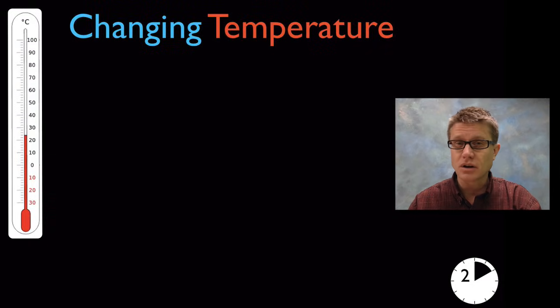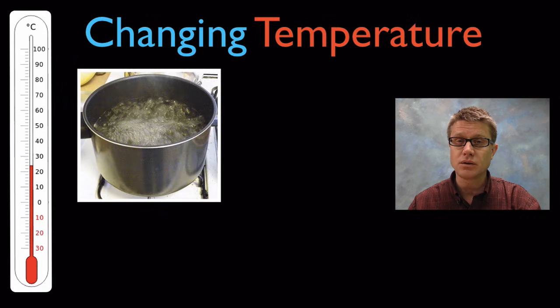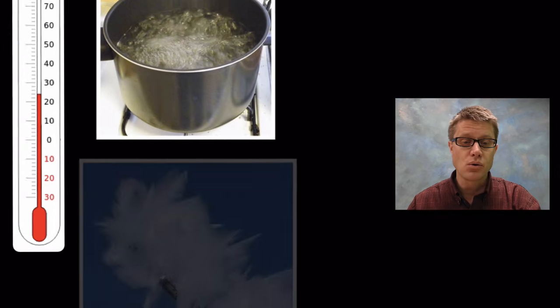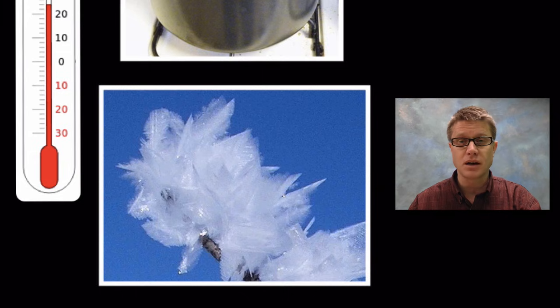And so where do you start as far as in teaching this? Well at the early elementary grades you want to talk about how changes in temperature can cause changes in molecules. And so for example boiling water, increasing it is going to increase the molecular motion. What are we going to create when we do that? We're creating water vapor.